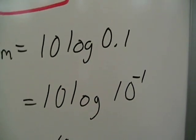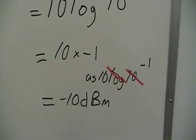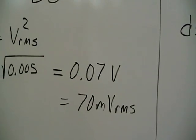And that leaves us with -10 dBm. So we have a check. We want a 70 millivolt rms signal.